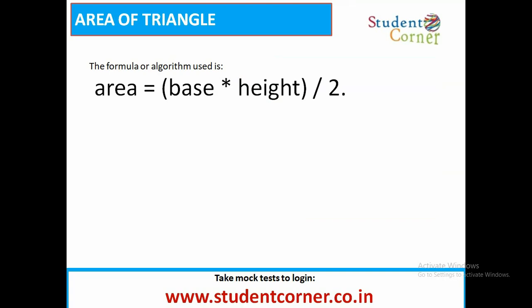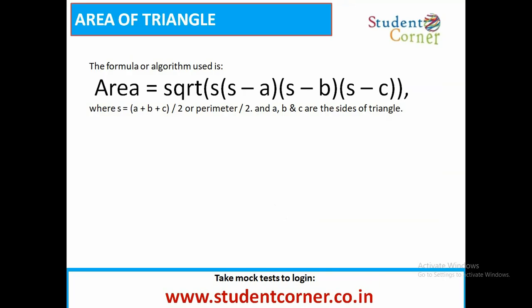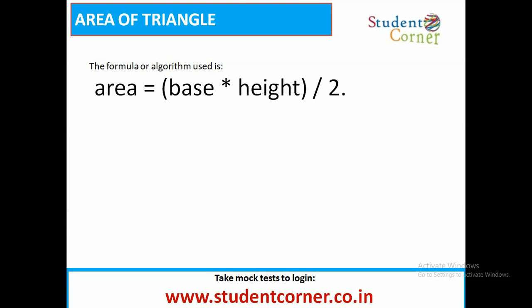Keep it in mind, area of the triangle is completely dependent upon these two formulas. One is area equals square root of s into s minus a into s minus b into s minus c, where s equals a plus b plus c by 2. And second mechanism, we need to take the formula of base into height by 2.